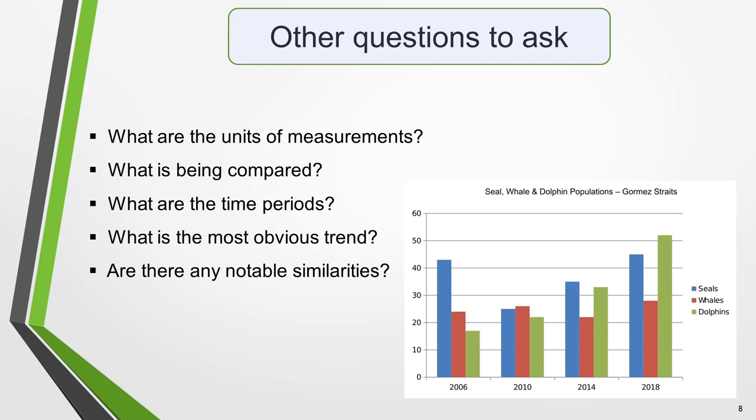Occasionally the units won't be given, but you'll be able to work out what they are either from the title of the chart or other information it includes. Next, think about what is being compared — usually you'll be asked to compare two or more groups of things. In our sample question, we're asked to compare three types of marine animals. Very often you'll have to compare what happens over a period of time. The time periods shown in the graph are also important: is the data from the past, the present or the future? This is essential to note because it will determine what tense or tenses you should use in your essay.